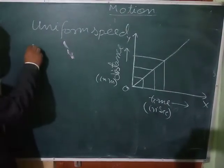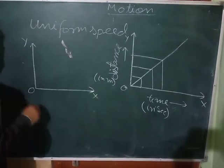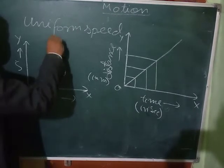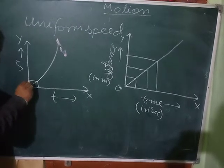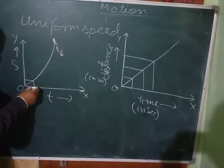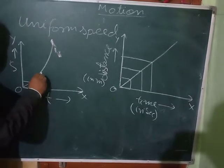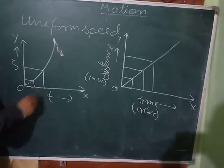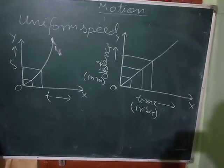For non-uniform speed, the distance-time graph is not a straight line. It can be a curve. In one case, the curve bends upward — for the same time interval, the distance covered is increasing. That means the speed is increasing.